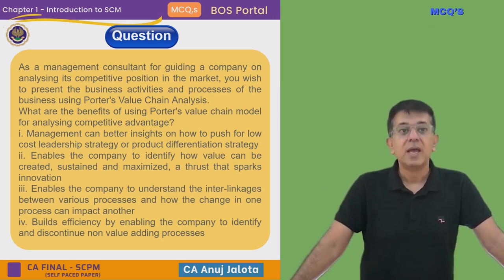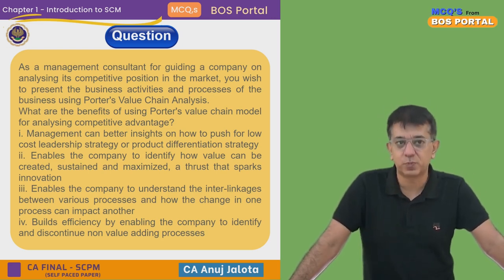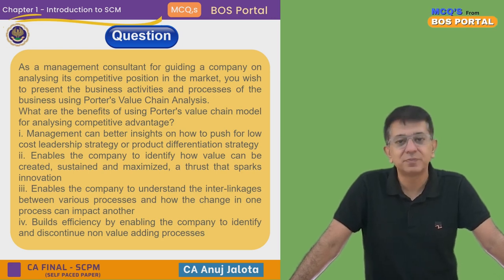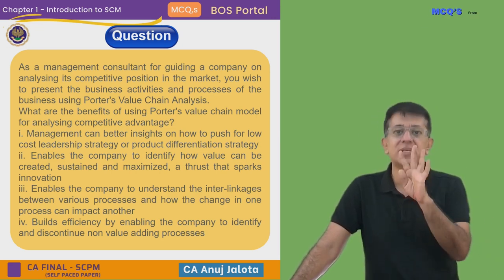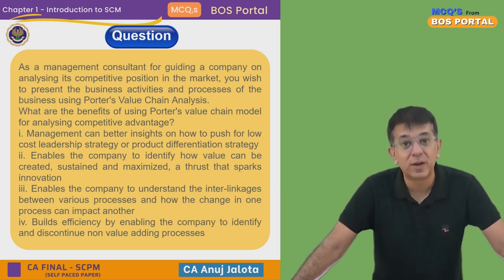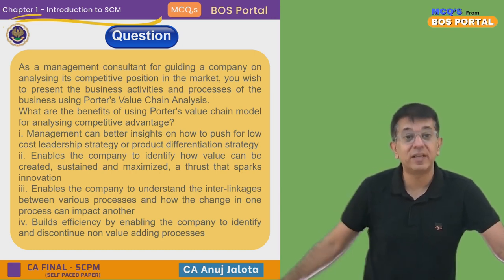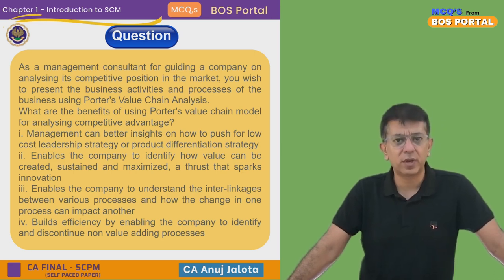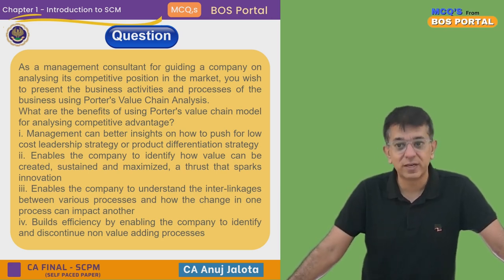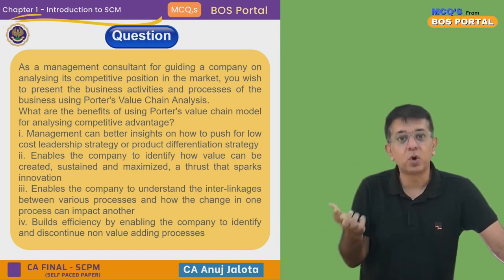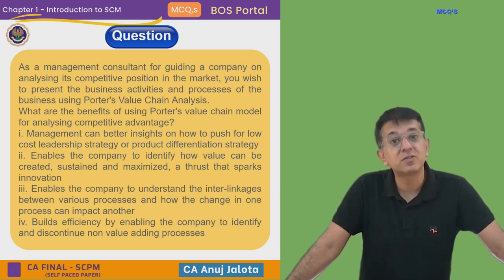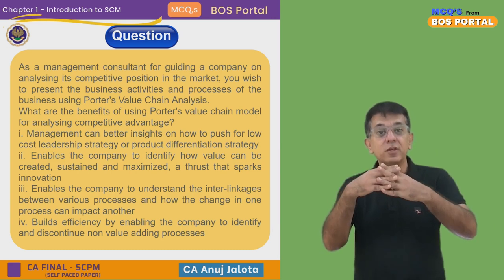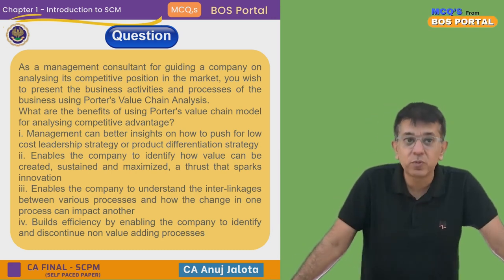Third advantage: it enables a company to understand the interlinkages between various processes and how a change in one process can impact another. You have five primary activities and four secondary activities. For example, if a company moves from manual machines to automated machines, it brings in more technology — a support activity — but that will certainly affect the morale of human resources, which is another support activity.